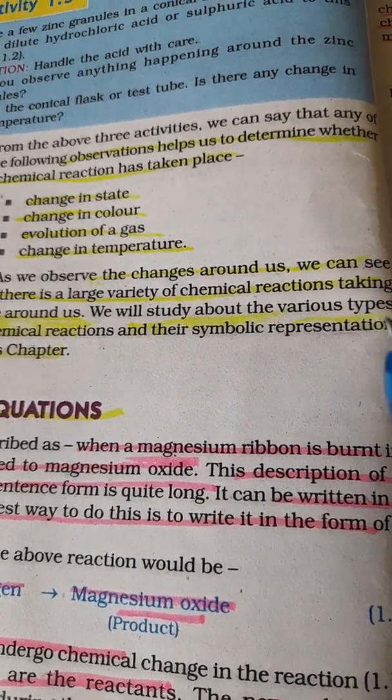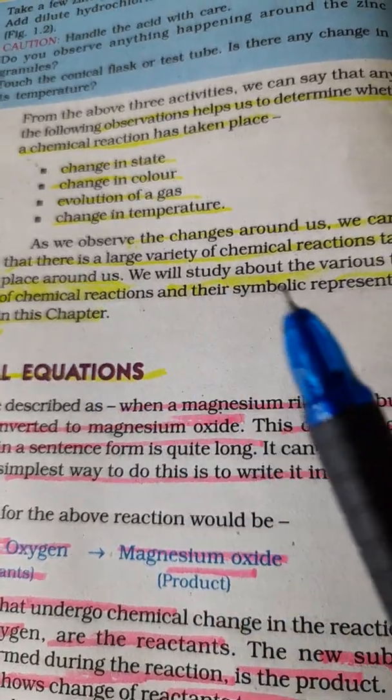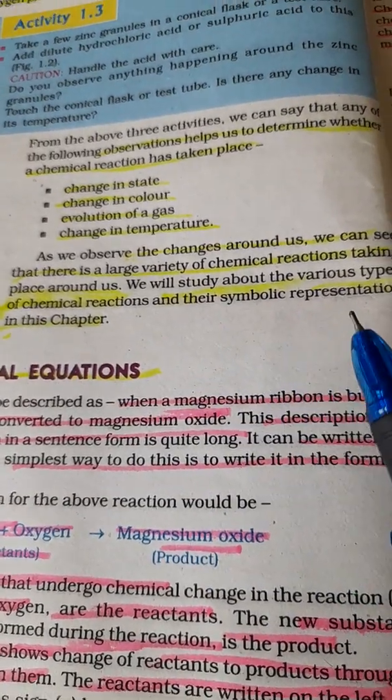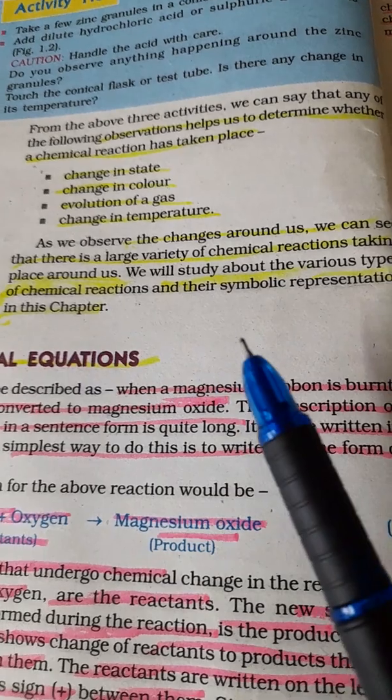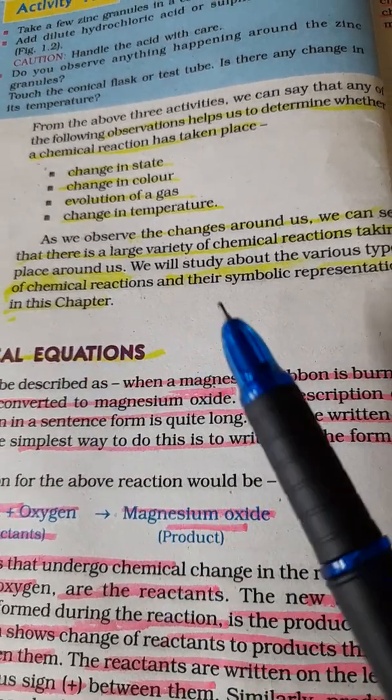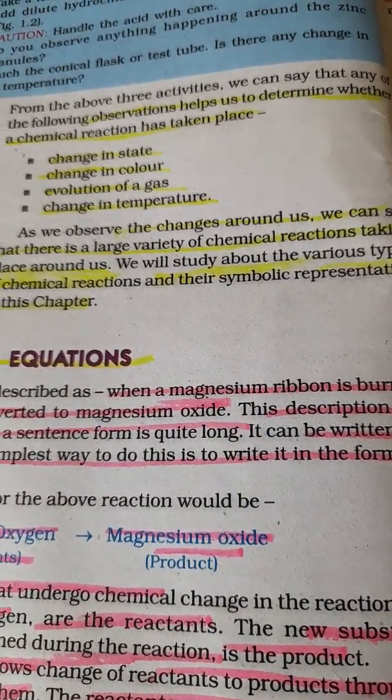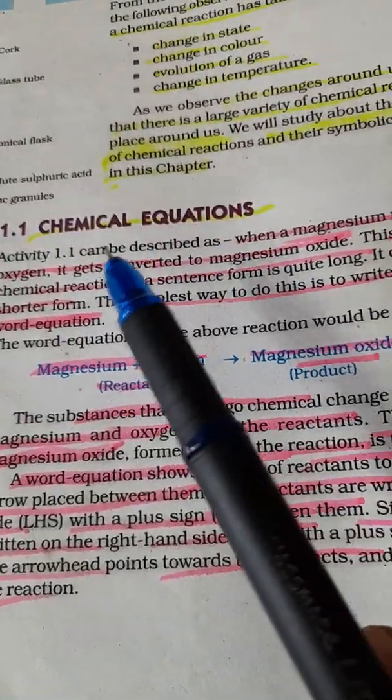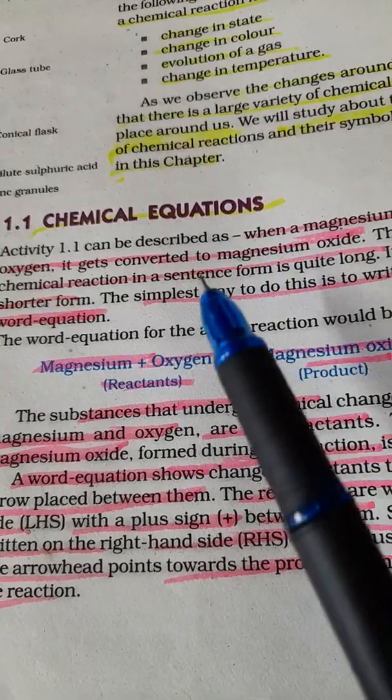When you look at the changes around you, there are a large variety of chemical reactions taking place. We will study about the various types of chemical reactions and their symbolic representation in this chapter. First of all we will discuss what is meant by chemical equation.